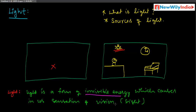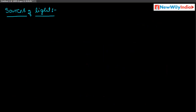Light is a form of invisible energy which causes a sensation of vision. Because of light you can see different objects and different colors in our surroundings. Now let us discuss about sources of light. The primary source of light is the Sun.